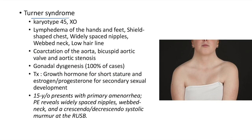Turner syndrome: the karyotype is 45 XO — basically a female with a missing X chromosome. Clinical features include lymphedema of the hands and feet, shield-shaped chest, widely spaced nipples, webbed neck, and lower hairline. It is associated with coarctation of the aorta, bicuspid aortic valve, and aortic stenosis.